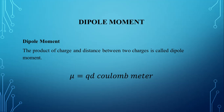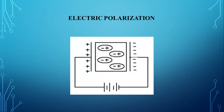It is called dipole moment. The dipole moment is represented by the letter mu, which is equal to q into d. Here, q is one of the charges and d is the distance between the two charges. Its unit is coulomb·meter. Next, we see electric polarization — the process of producing electric dipoles inside the dielectric material by the application of an external electric field is called polarization or dielectric polarization.